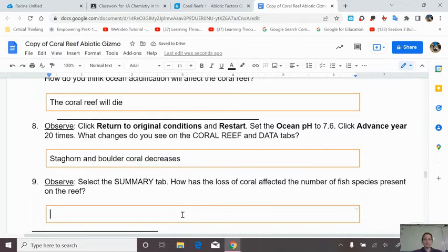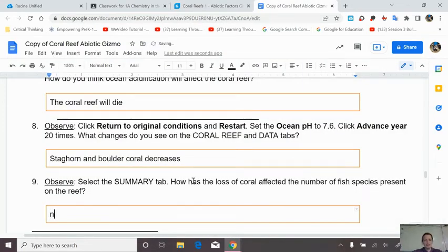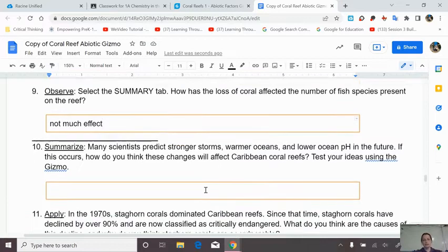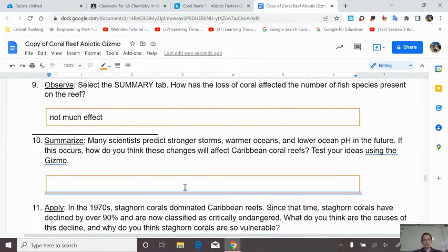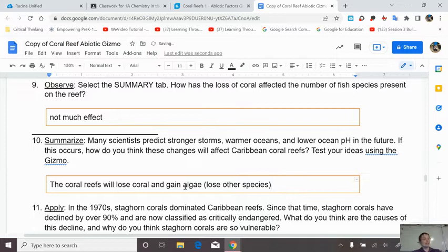We're lowering the pH, right? Now I'm going to advance 10 years. You pay attention to the picture. Well, that one was kind of hard to see. So let's look at the data. We have everything selected and we see, well, lots of stuff stays steady, but the staghorn coral goes down and the boulder coral goes down. So staghorn and boulder coral decreases. So how has the total number of fish species? If we look, not much effect.